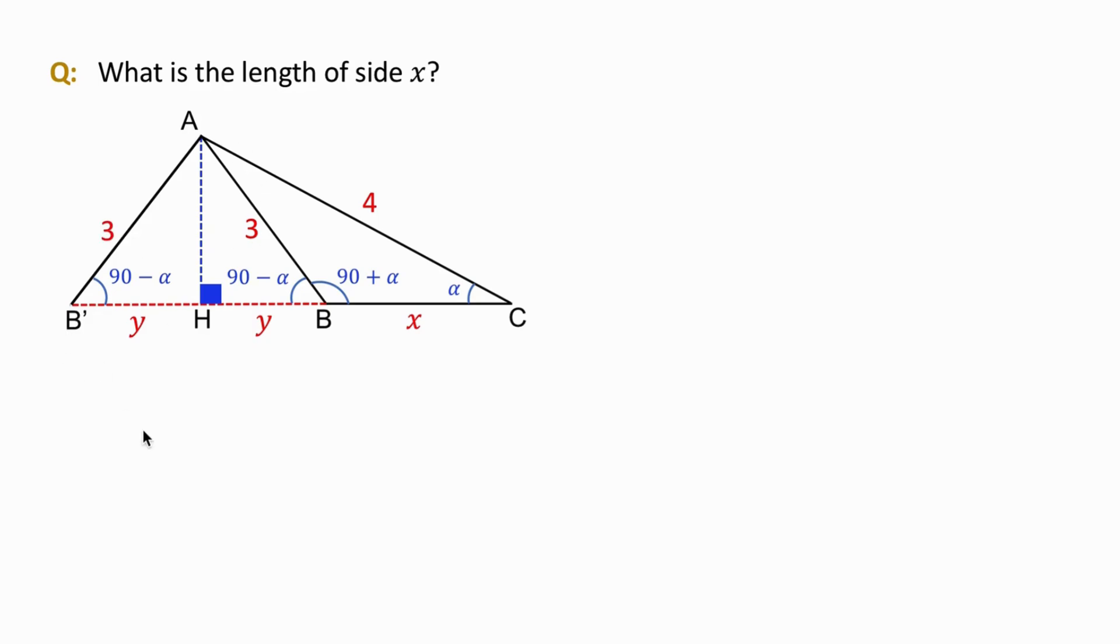Now, look at the angles C and B'. We show that B' is 90 minus alpha and C is alpha. So, the angle A is the difference between 180 degrees and the sum of these two angles. So, if we calculate this difference, the angle A is found as 90 degrees.